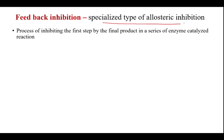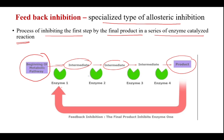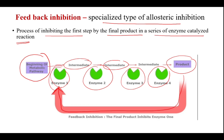Next is feedback inhibition, a specialized type of allosteric inhibition. This is the process of inhibiting the first step by the final product in a series of enzyme-catalyzed reactions. Enzyme 1, enzyme 2 — this is the beginning of the metabolic pathway; you see the formation of intermediates, and finally the product. Each reaction is catalyzed by a separate enzyme, and when the product itself inhibits the first enzyme, that is called feedback inhibition.